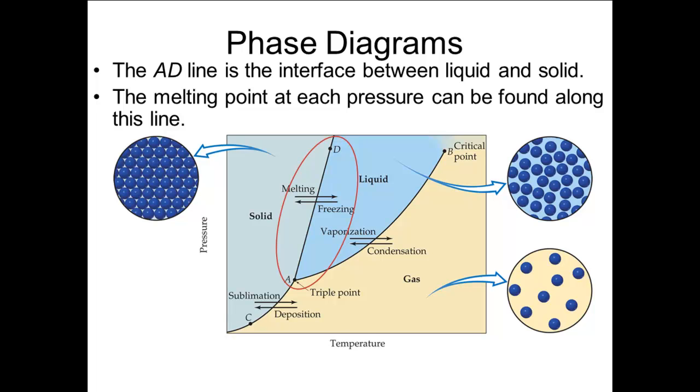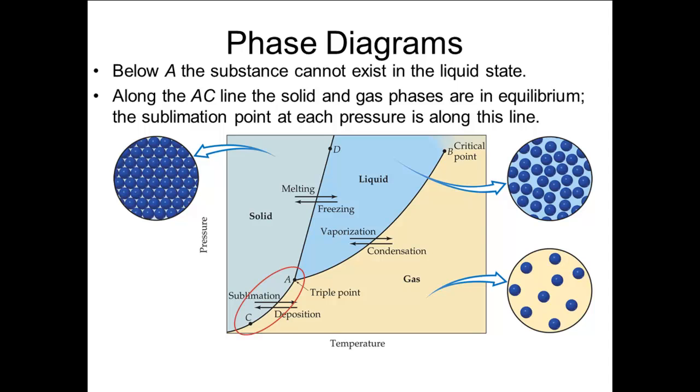The line AD is the melting point line. Along that line, the liquid and solid are in equilibrium. The line AC is the sublimation point line, where the solid and gas are in equilibrium. At pressures below the triple point, the liquid cannot exist, so sublimation occurs.